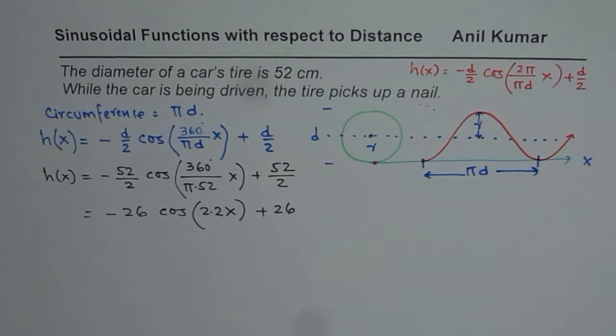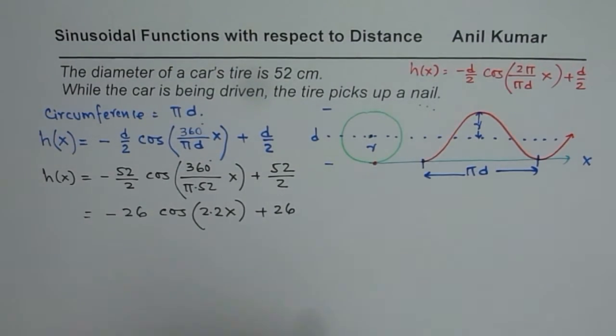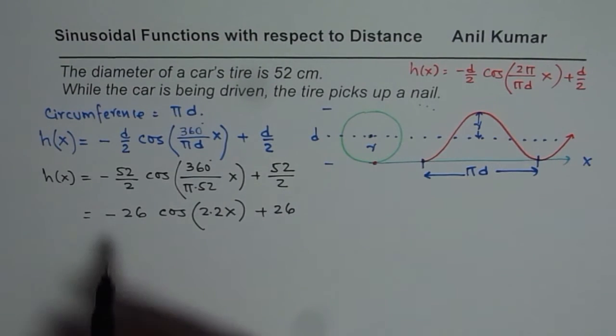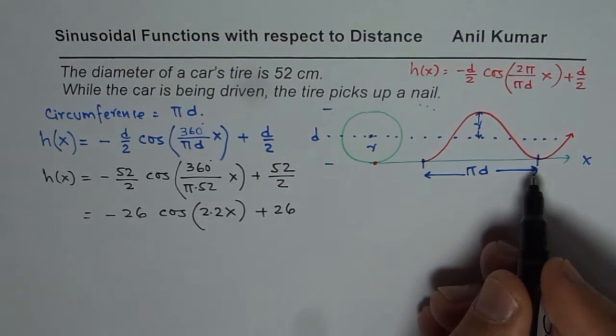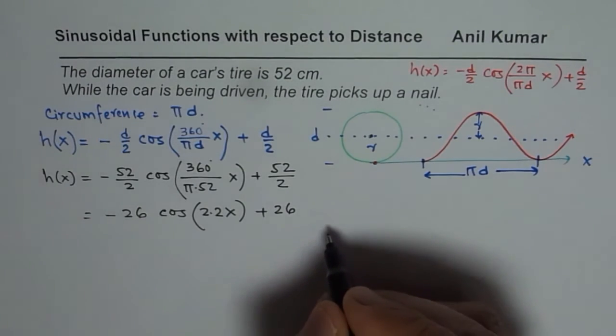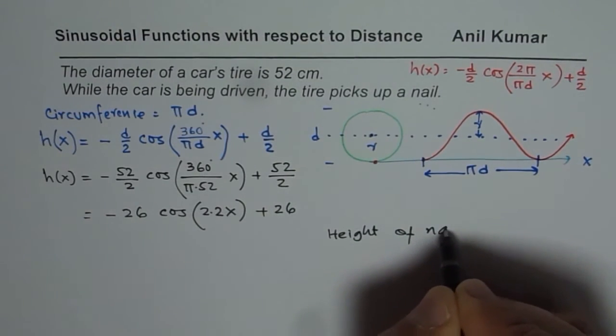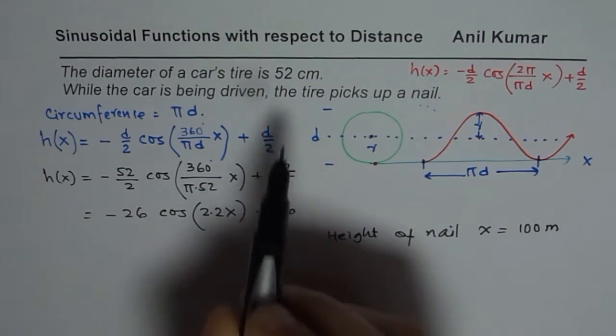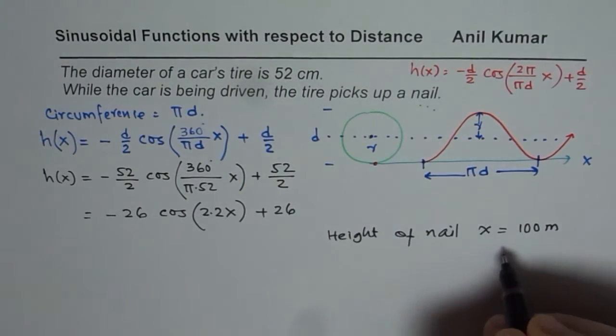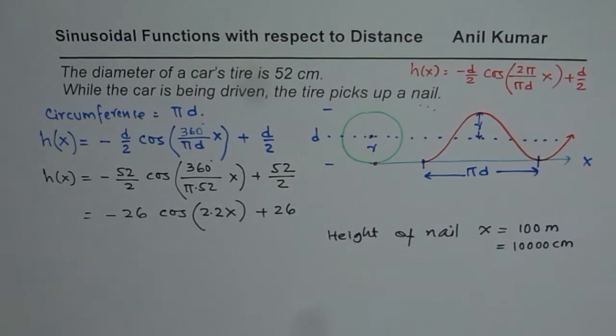I hope till now everything is very clear to you how to get the equation for height of the nail. We are finding height of the nail with respect to distance travel. Now, you can do some calculations. You can find height of the nail when the distance traveled is, let us say, 100 meters. Now you should see that units are centimeters, so 100 meters will be equal to 100 times 100 centimeters.